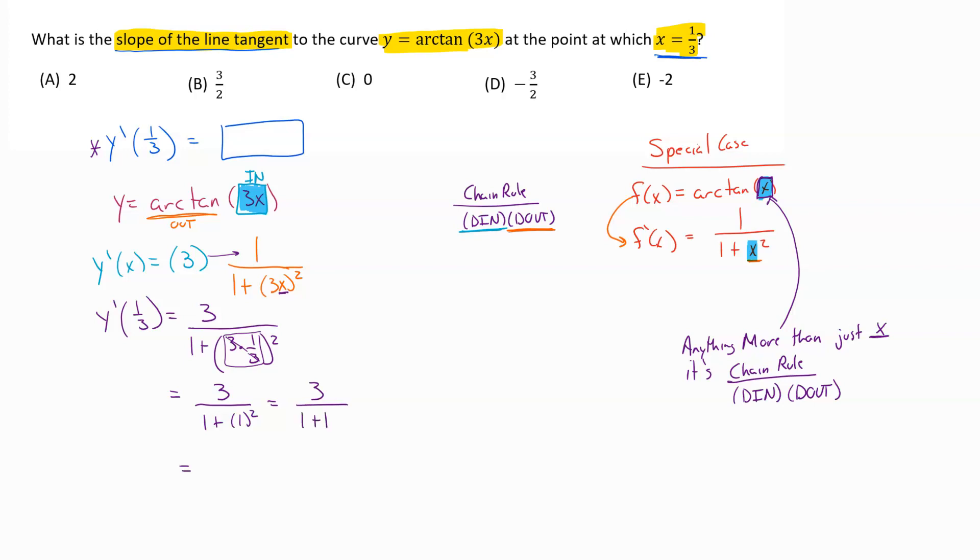So y prime, our derivative at x equals 1 third, the slope of our tangent line is 3 halves. And so then you just go up top, find your answer, and you're good to go.